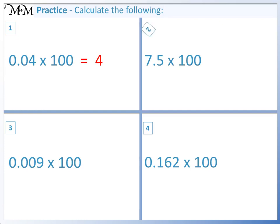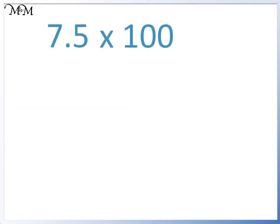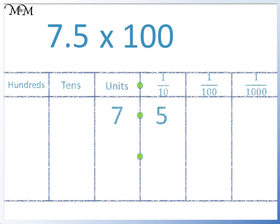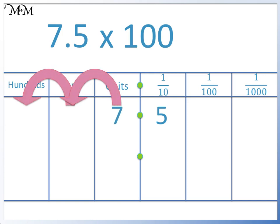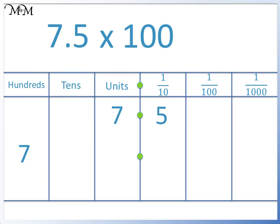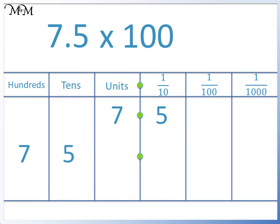Question 2: 7.5 times 100. We move each digit two places to the left. We will start with the 7. There is a space in the units column, so we write in a zero.